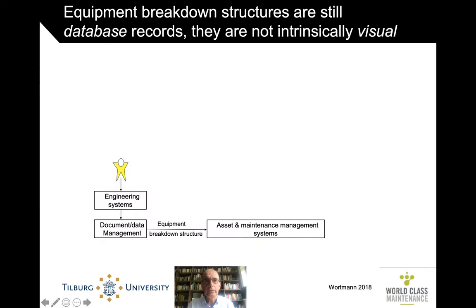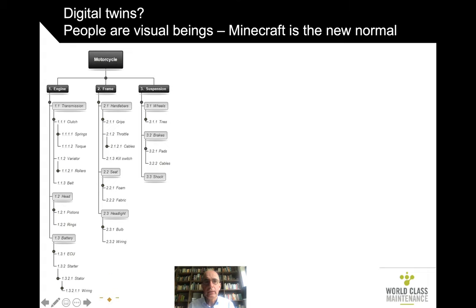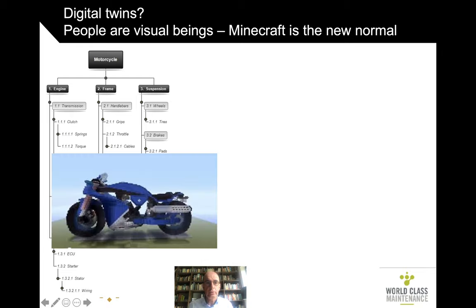Interfacing or Integrating? We've seen that the data, the way that they're represented in asset management IT systems, is still in the good old 1980s database record format. It's still these hierarchical bill of material type of trees. They're not intrinsically visual. And people are intrinsically visual. When we talk about a motorcycle, we don't want to talk about it in this kind of graph — we want to talk about this thing.